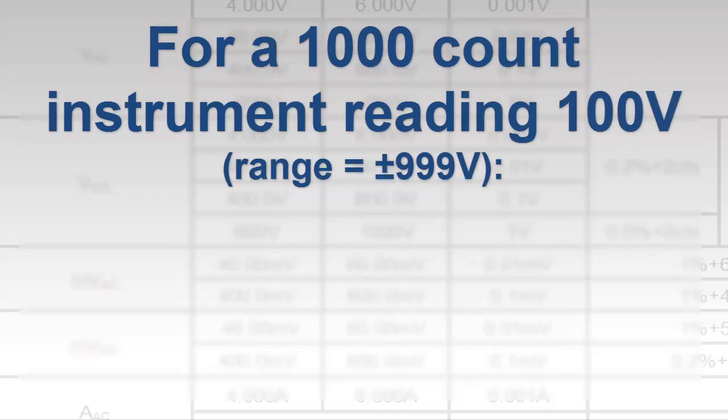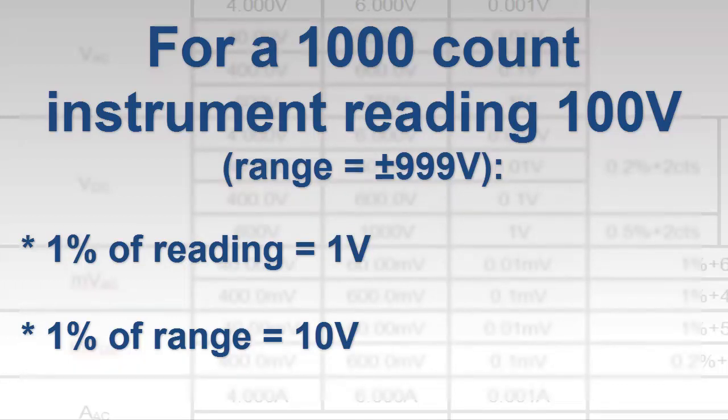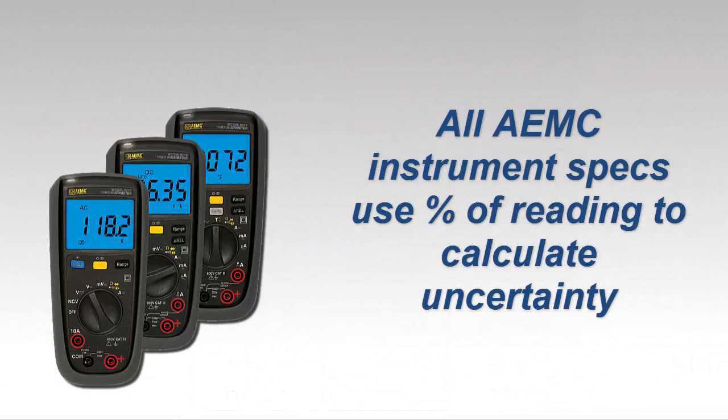For example, consider a one-thousand-count digital multimeter displaying a reading of 100 volts. One percent of the reading would be one volt, while one percent of the range would be ten volts. So be sure to check whether the percentage applies to the reading or the range when comparing specifications of different digital multimeter models. Note that the uncertainty specifications for all AEMC instruments are always expressed as a percentage of the reading.